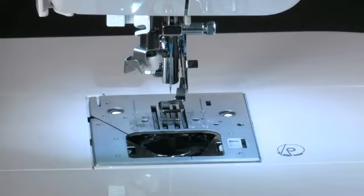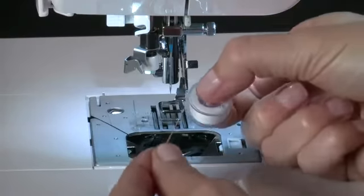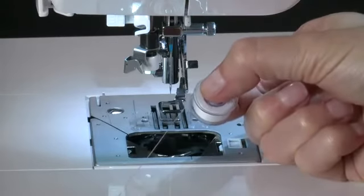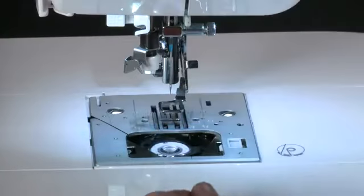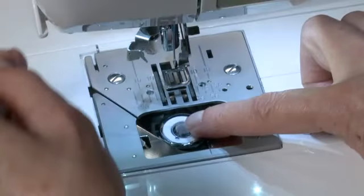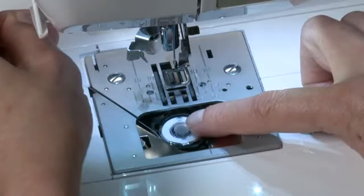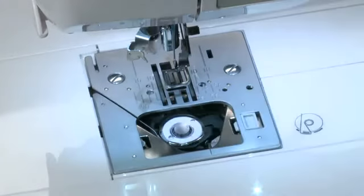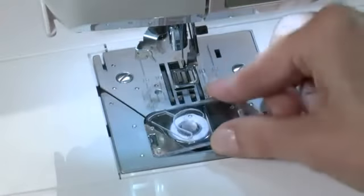To insert the bobbin, raise the needle to its highest position by turning the handwheel counter-clockwise. Place the bobbin into the bobbin case, then pull the thread to check that the bobbin turns counter-clockwise. Pull the thread first into this groove, and then to the left. With a finger held gently on top of the bobbin, pull the thread until it slips into this next slot. Now pull the thread along the groove on the needle plate until it is snipped with the thread cutter on the top left of the needle plate. Replace the bobbin cover.